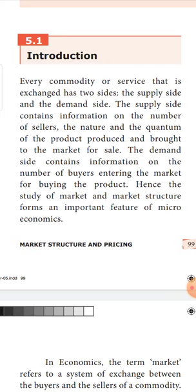We learnt what is cost of production, and in that we learnt different concepts of cost starting from money cost, real cost, explicit cost, implicit cost, sunk cost, opportunity cost, social cost, fixed cost, variable cost, and average cost. After that we learnt about revenue — what is revenue — and in that we learnt about three concepts: average revenue, marginal revenue, and total revenue. Then we also learnt the relationship between average, marginal, and total revenue, and the relationship between average cost and marginal cost.